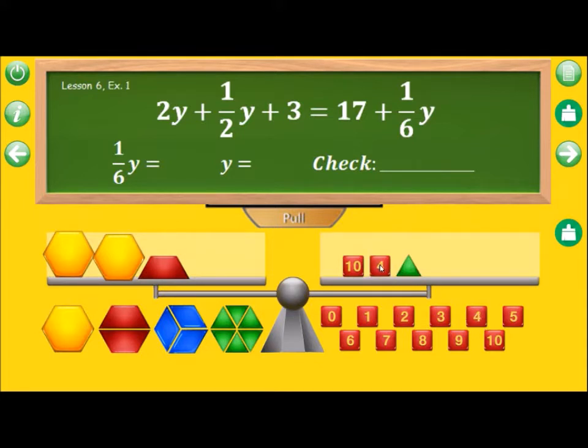Now, our goal is to end up with cubes on one side, constants on one side, and fraction blocks on the other. So this green block is in the way. I can remove a green block from the right side, provided I remove a green block from the left side.